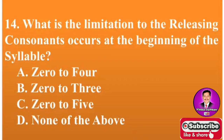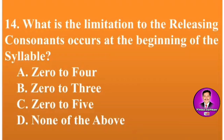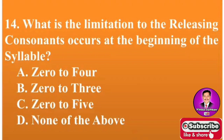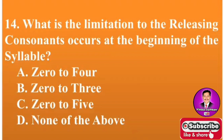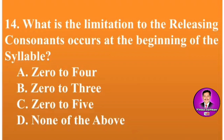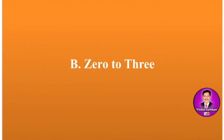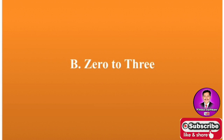Next MCQ: What is the limitation due to the releasing consonants occurring at the beginning of the syllable — the syllable structure? Options are A: 0 to 4, B: 0 to 3, C: 0 to 5, D: none of the above. The correct answer is B — 0 to 3.